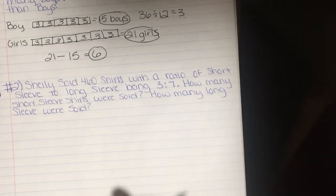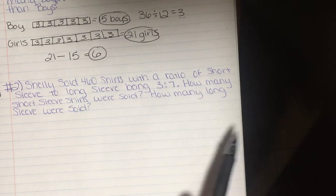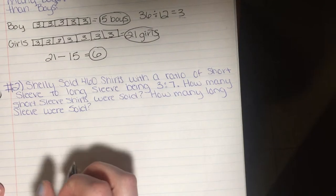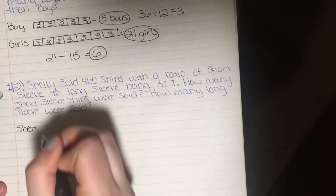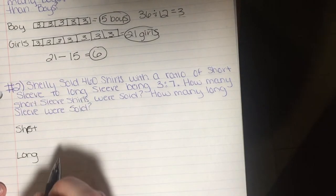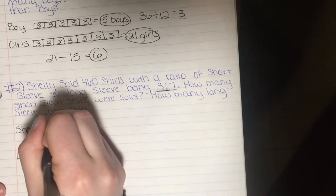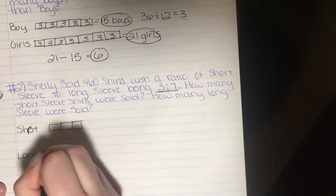For our next problem: Shelly sold 460 shirts with a ratio of short sleeve shirts to long sleeve shirts being 3 to 7. How many short sleeve shirts were sold and how many long sleeve shirts were sold? So we write short and long, and our ratio is 3 to 7, so 3 boxes for short sleeve and 7 boxes for long sleeve.